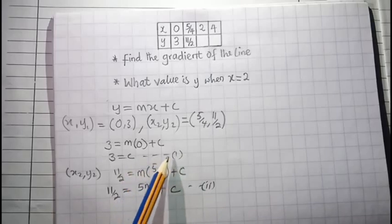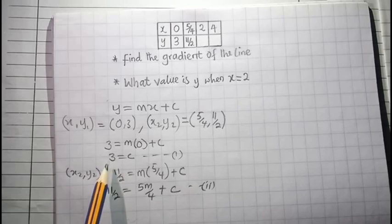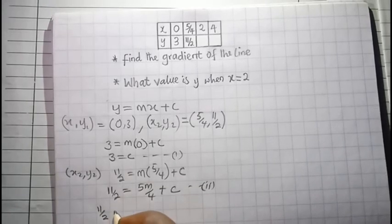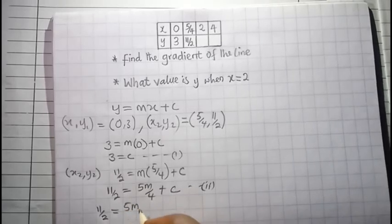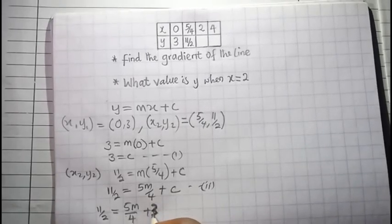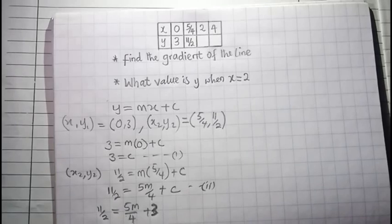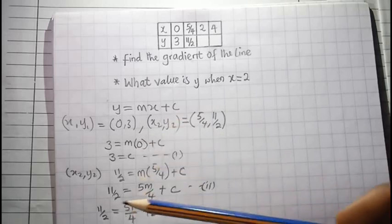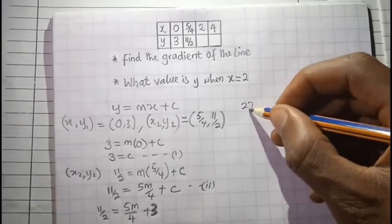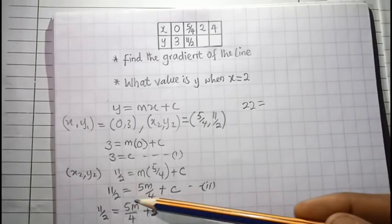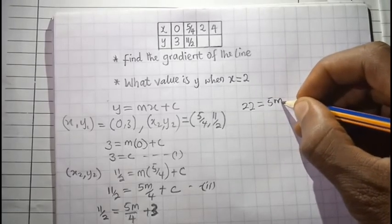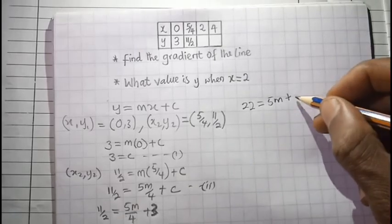Looking at equation 1, c equals 3, so we substitute c equal to 3 into equation 2. We get 11 over 2 equal to 5m over 4 plus 3. Now let's multiply each term by 4: 4 times 11 over 2 gives us 22, equal to 4 times 5m over 4 which is 5m, plus 4 times 3 which is 12. So we have 22 equal to 5m plus 12.